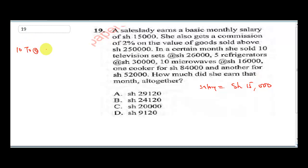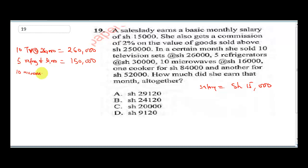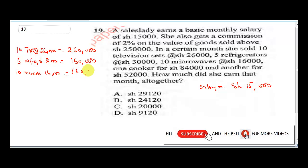In a certain month she sold: 10 TV sets at 26,000 each, giving 260,000. Five refrigerators at 30,000 each, giving 150,000. Ten microwaves at 16,000 each, giving 160,000. One cooker at 84,000, and another cooker at 52,000.